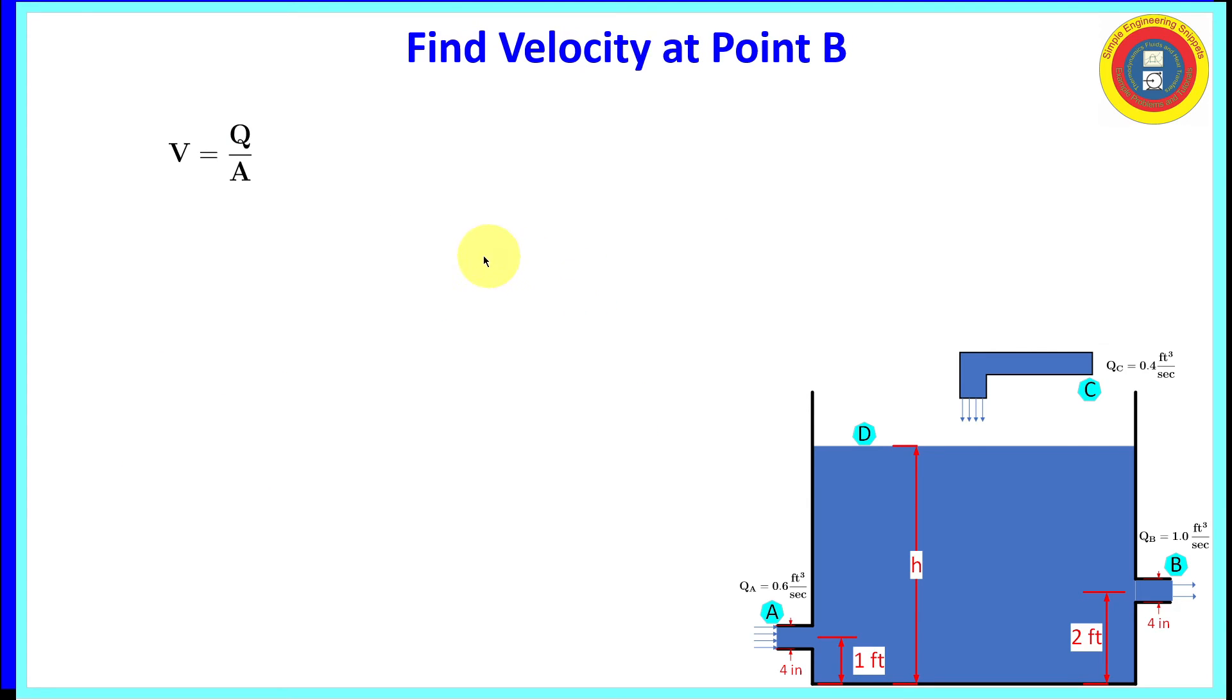So we're going to need the velocity at Bravo. Well, again, it's pretty straightforward. Velocity is equal to the volume flow divided by the flow area. And that information is provided. Substituting in the values and units, we obtain that the velocity at Bravo is 11.5 feet per second.